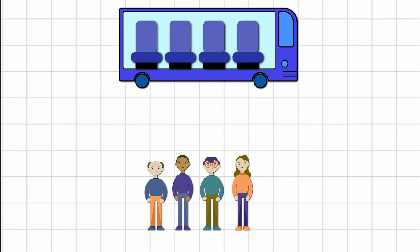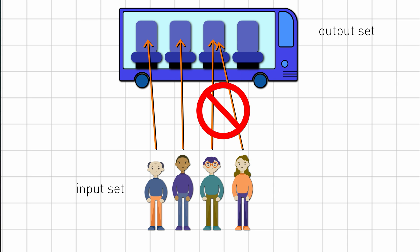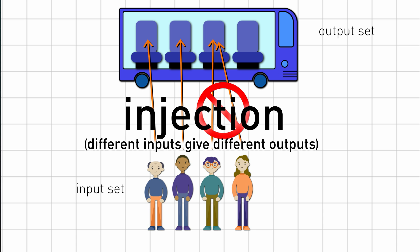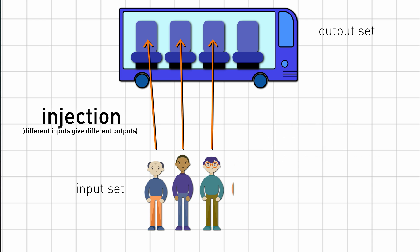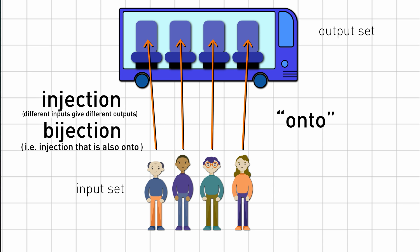In more formal language, suppose that you have a mapping from people, that's the input set, to seats, that's the output set, such that different inputs correspond to different outputs, which means no two people in the same seat. Mathematicians call this an injection. Now, if in addition, every element of the output set gets something mapped onto it, i.e. if every seat ends up with a person sitting in it, then we say that the map is onto or surjective. Now, if the map is not onto, like when some seats ended up empty, then the cardinality of people, the input, is less than the cardinality of the seats. But if the map is onto, which means no empty seats, then the map is a full-fledged one-to-one correspondence, also known as a bijection between the input and output sets, and the cardinalities of those sets have to be the same.